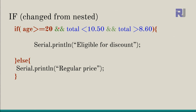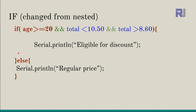Alternatively, you could rewrite this as a single if: if age >= 20 AND total < 10.5 AND total > 8.6, all three conditions must be true to print 'eligible for discount.' You could then have one else — or multiple else-if branches — after it. Both approaches are valid.